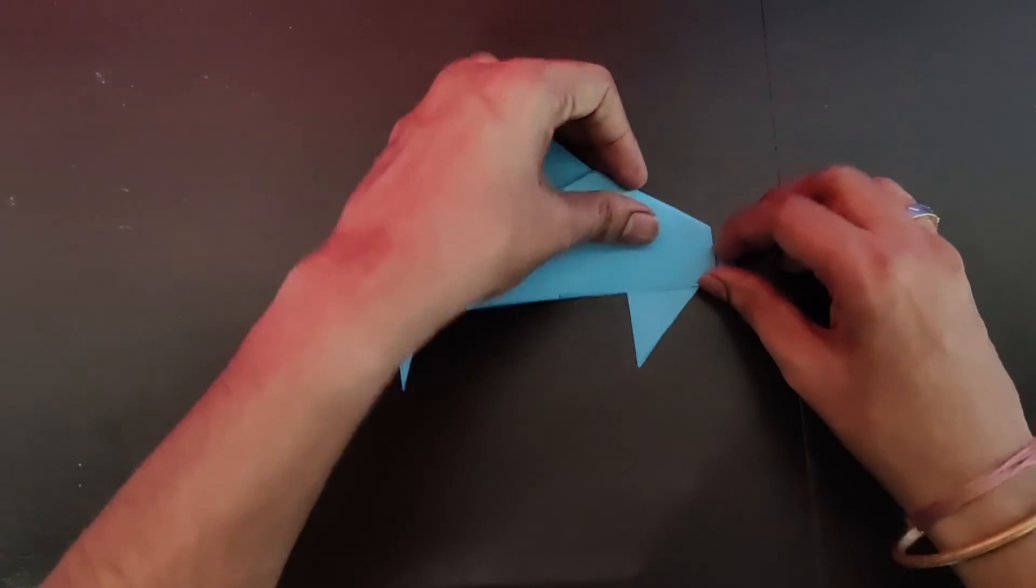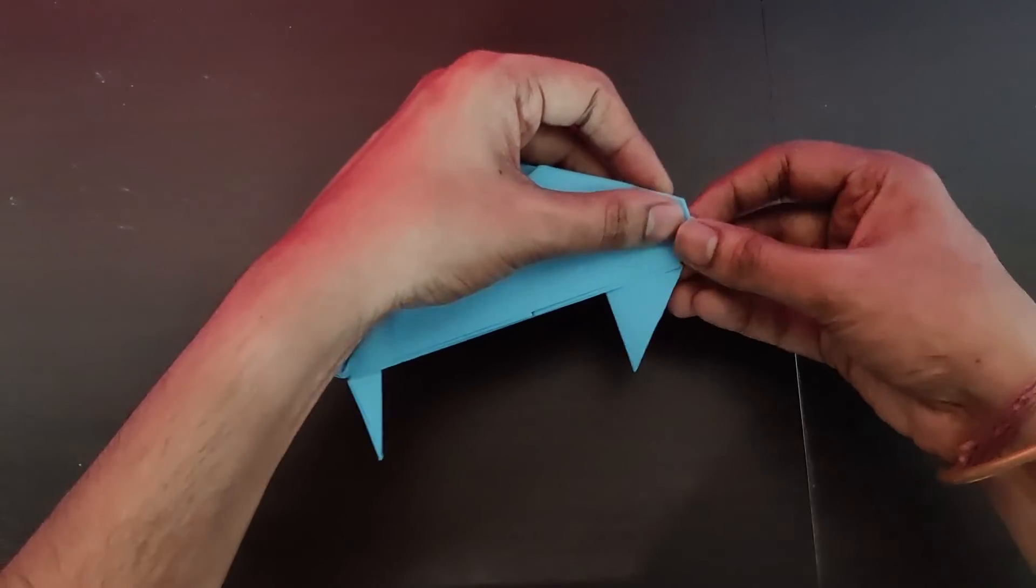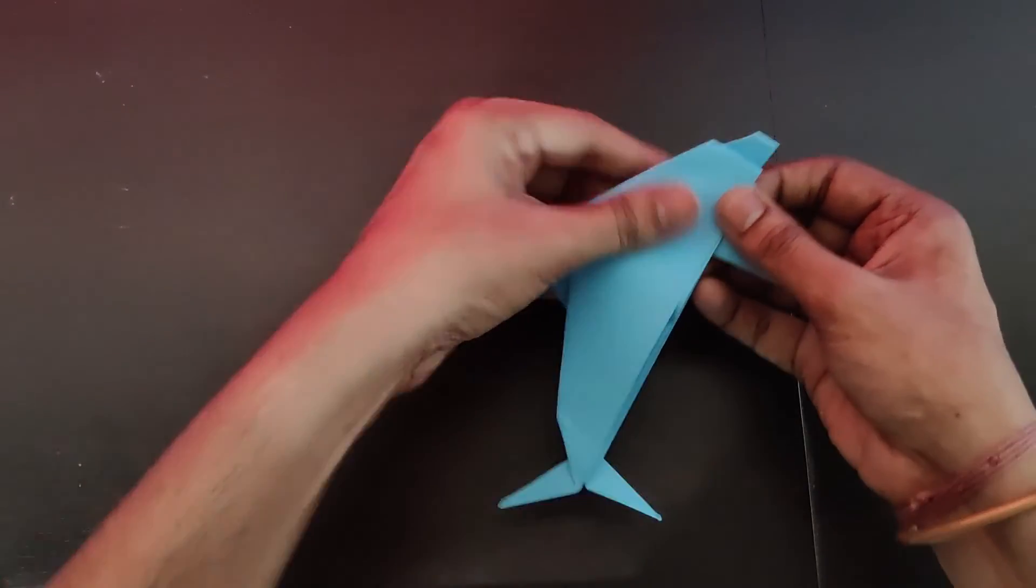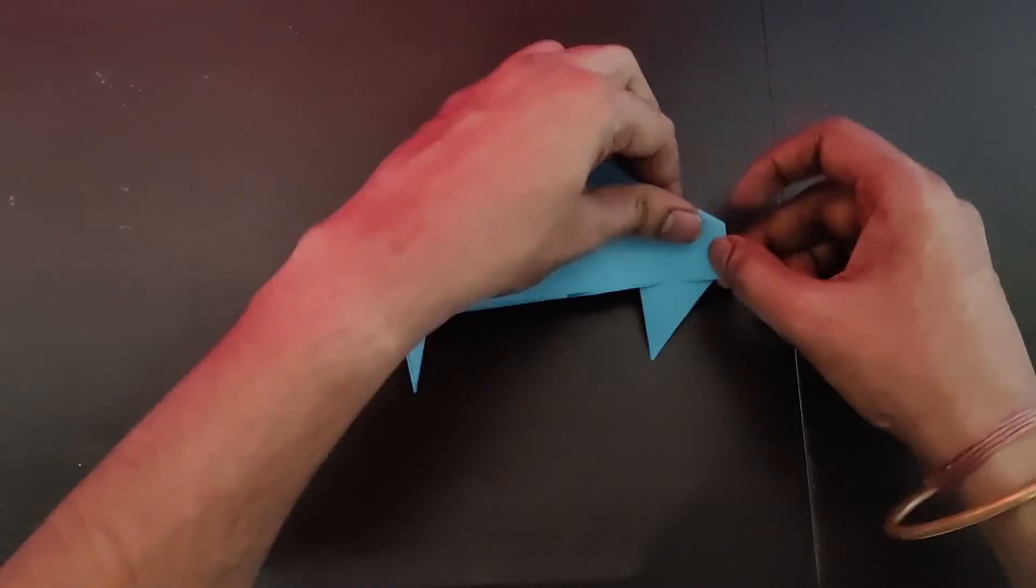You can make an eye and decorate it as per your wish. And this is the basic architecture or the skeleton of the final origami dolphin model.